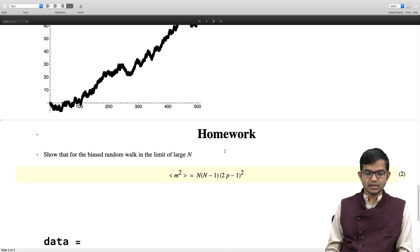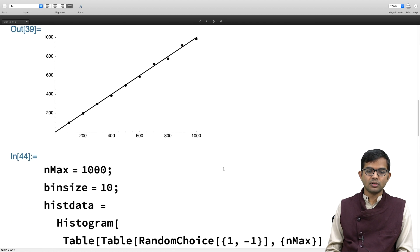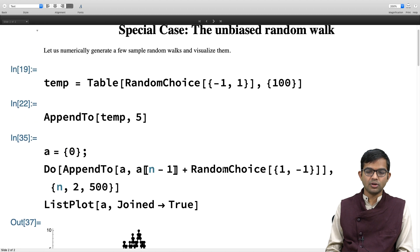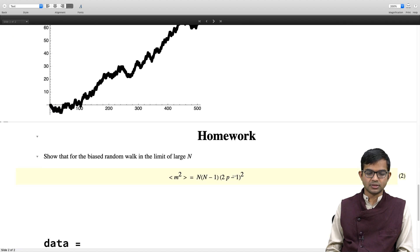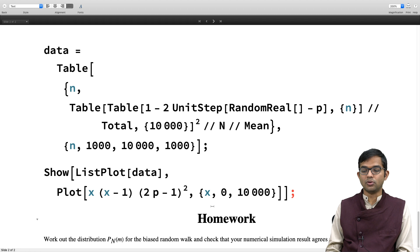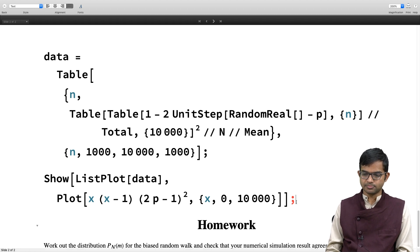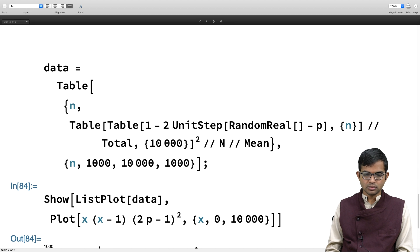Homework is to check that average of m squared equals n times (n minus 1) times (2p minus 1) squared. I've worked this out. I want you to use the same type of code but with small modifications, and check that the biased random walk corresponds to this equation. I also have data for the histogram, that's also homework.